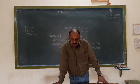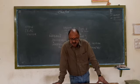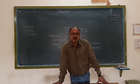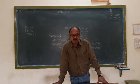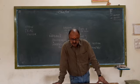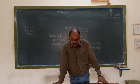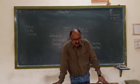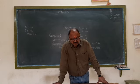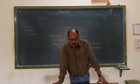Anil asks: 'Bhavata Ropita Vruksha Api Asti Vah?' — Is there a tree planted by you there? Has plantation been done there, have trees been planted?